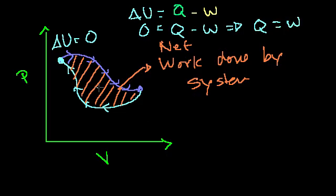This area inside the path is the work done by the system. And if you don't remember where that came from: pressure times change in volume is a little incremental change in work, and that's why it relates to the area.